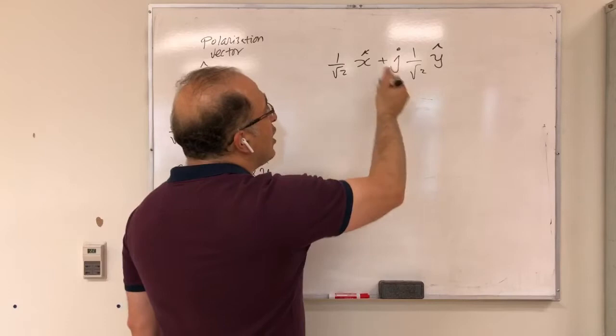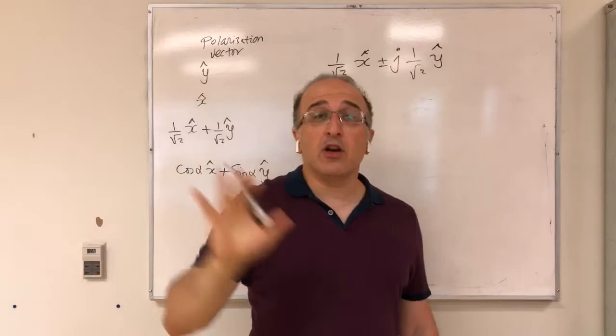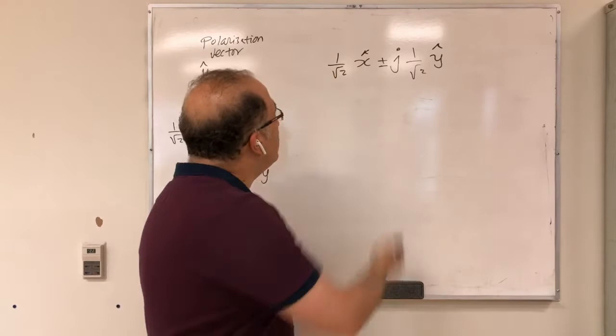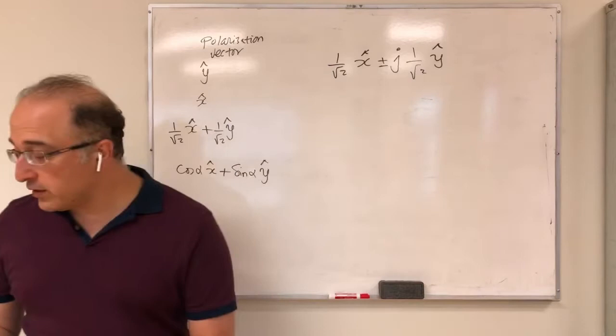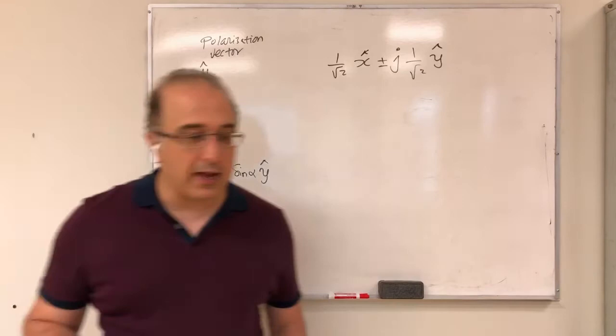The j could be plus or minus depending on right-hand or left-hand circular polarization. We're going to discuss that extensively in a different video related to the lab. So this is the polarization vector for a circularly polarized antenna.